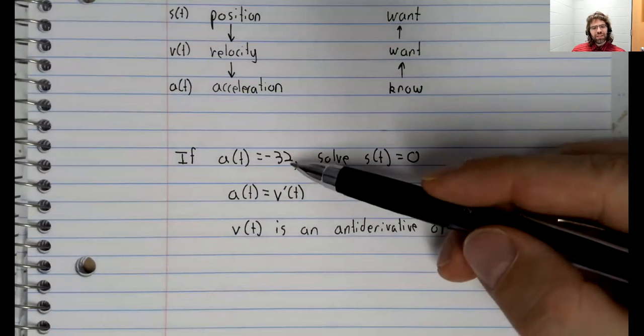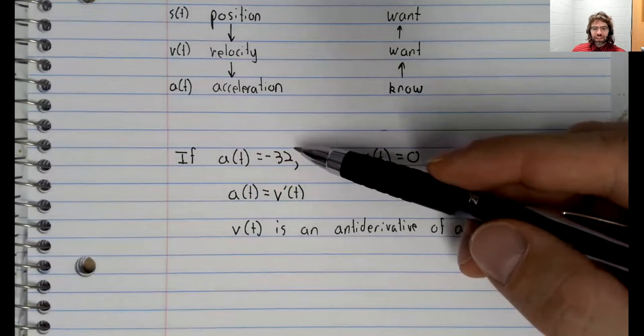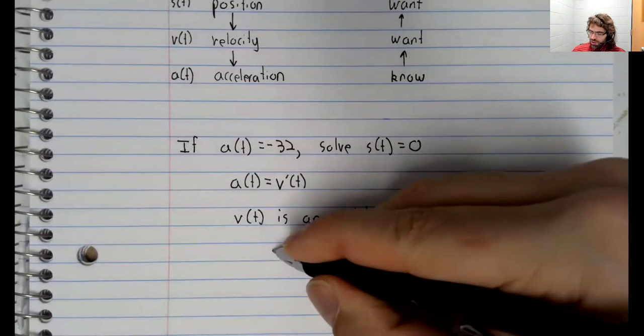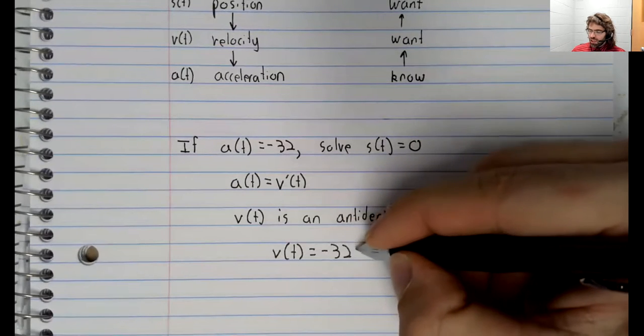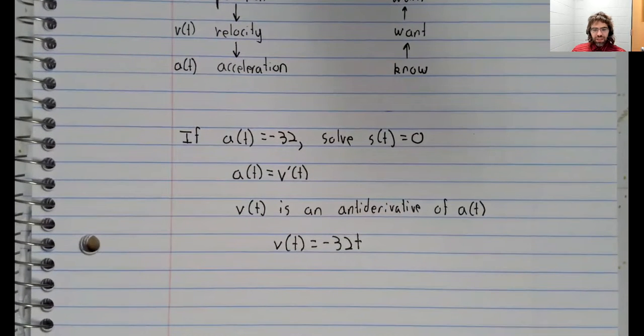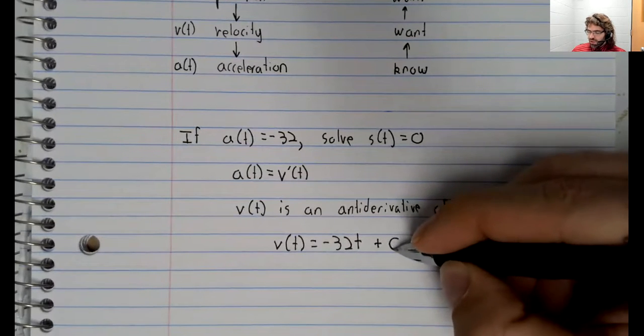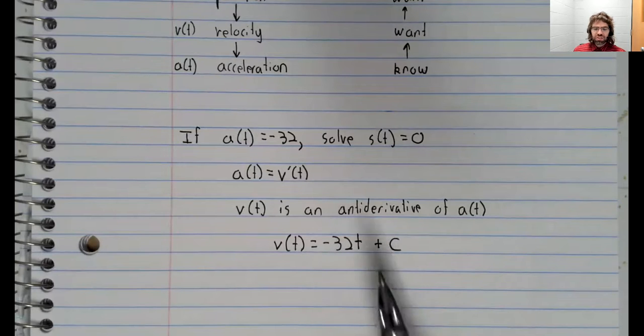So an antiderivative of negative 32. Well, you really just need to do homework and get experience with these things. But if you give it some thought, you'll hopefully agree that negative 32t is an antiderivative. However, it's not the only antiderivative, and it's not necessarily the antiderivative that we want. Fortunately, we know that any other antiderivative looks like this. Any other antiderivative is just this antiderivative plus a constant.